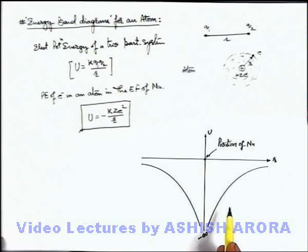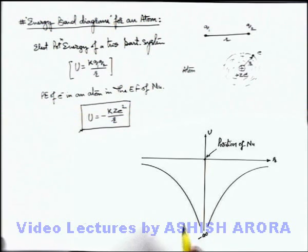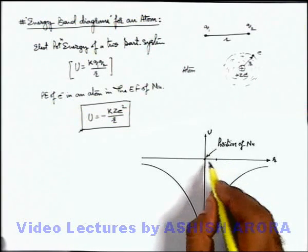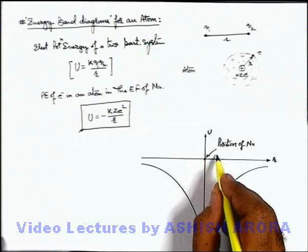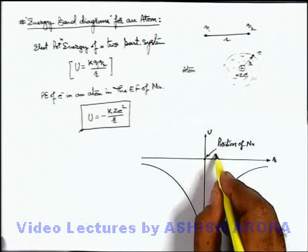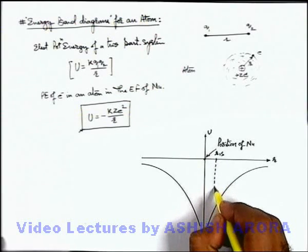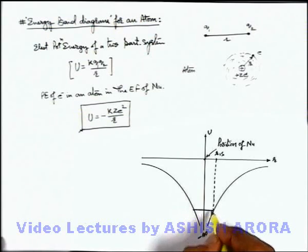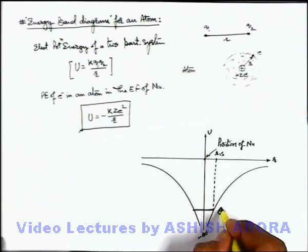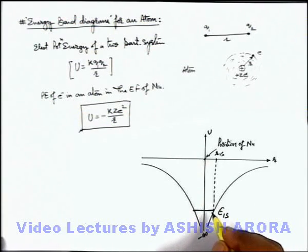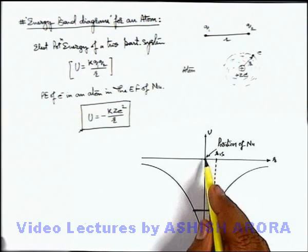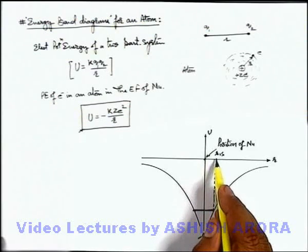Actually we know that electrons are trapped in the surrounding region of nucleus in various orbitals, and the closest orbital is 1s orbital. Say it is located at a distance r1, or you can say it is r of 1s orbital. So at this position, the potential energy of electron is given by E 1s. This is the potential energy of electron if it is in the region from nucleus at a distance r 1s.